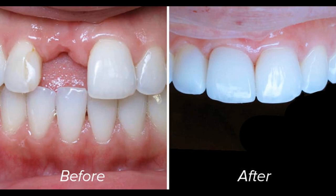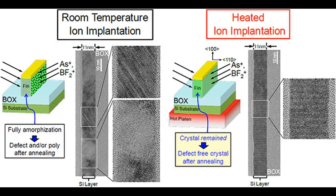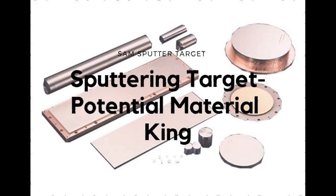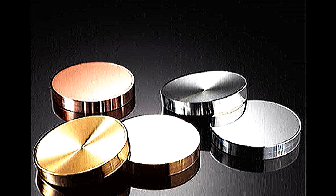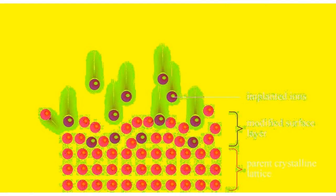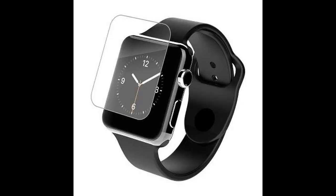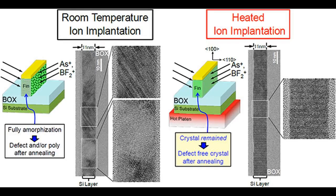Ion implantation can be used to achieve ion-beam mixing, i.e. mixing up atoms of different elements at an interface. Because ion implantation causes damage to the crystal structure of the target, which is often unwanted, ion implantation processing is often followed by a thermal annealing.